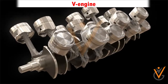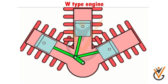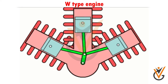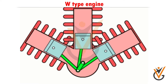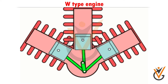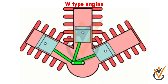In V-type engines, the cylinders are placed in two banks with some angle between them. The angle between the two banks is kept as small as possible to prevent vibration and balancing problems. In W-type engines, the cylinders are arranged in three rows forming a W-type arrangement. W-type engines are used when 12-cylinder and 16-cylinder engines are produced.